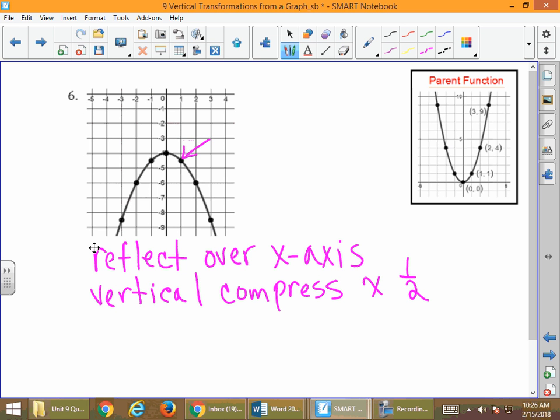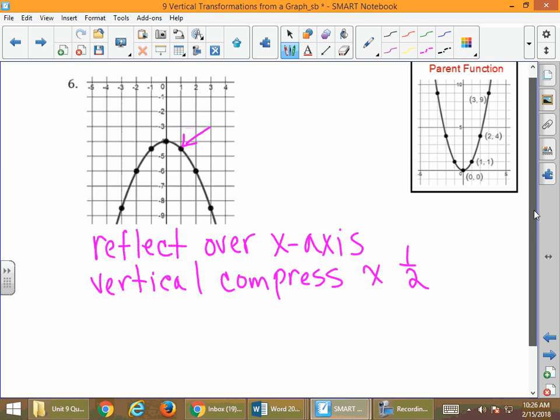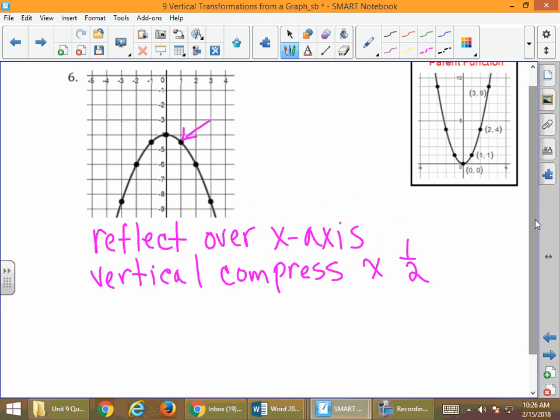Lastly, what I want to do, and I know that this paper doesn't ask us to do it, but on our practice we need to do it, how do we write the equation of this function? Because not only did we reflect over the x-axis, and not only do we have the vertical compression, I totally overlooked the fact that we do have one more transformation, and that is that we went down four. So our vertex is down four here.